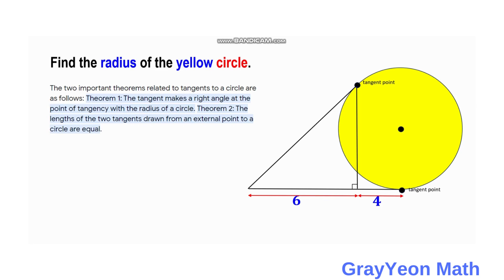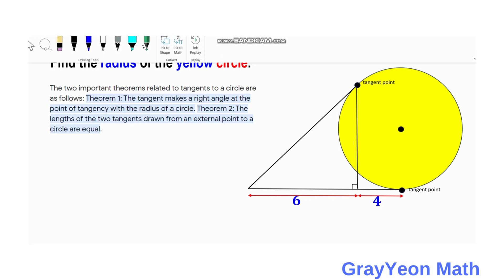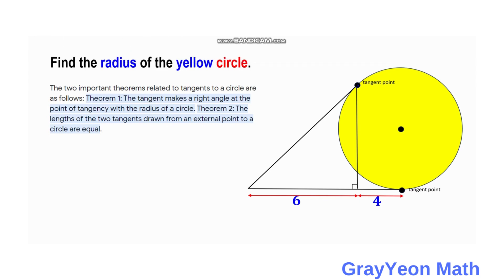In our case, if we draw this radius towards the tangent point, then this radius is actually 90 degrees with this tangent line. And also if we draw another radius to the next point of tangency, we have this perpendicular line.